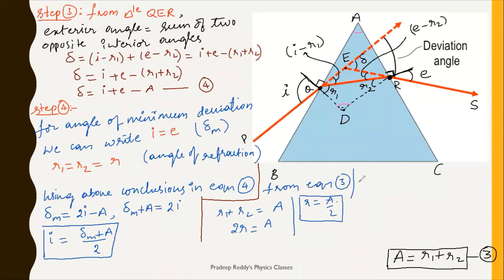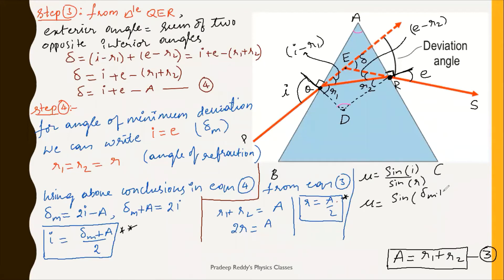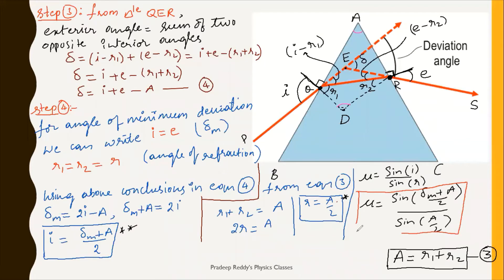Using the refractive index formula mu equals sine of angle of incidence divided by sine of angle of refraction, we substitute: i equals (delta_m plus A)/2 and r equals A/2. Therefore, mu equals sine((delta_m plus A)/2) divided by sine(A/2). This is the final expression for finding the refractive index of the prism, and this formula must be remembered.